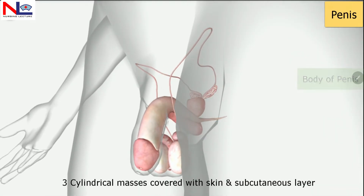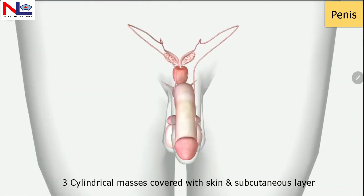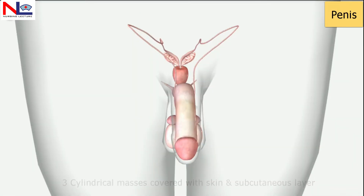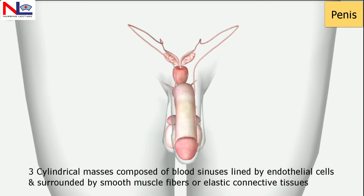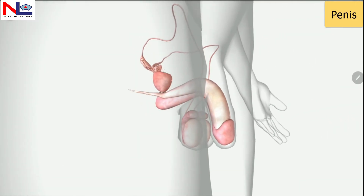All three erectile tissues are composed of numerous blood sinuses which are lined by endothelial cells, and these are surrounded by smooth muscles and elastic connective tissue. The distal end of the corpus spongiosum is the enlarged region known as the glans penis.